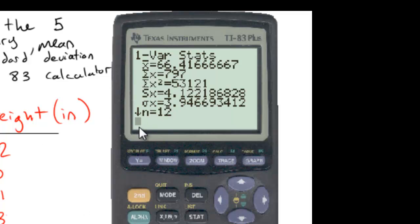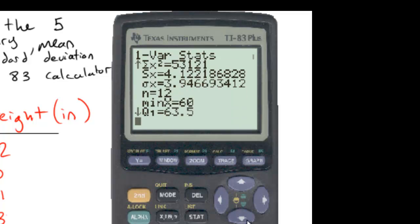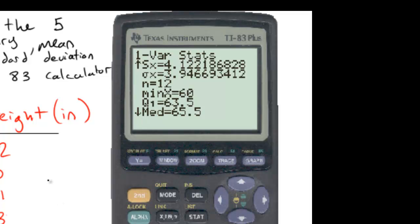If this was our whole class then we would want to use the population standard deviation. N is the number of values that I have. Notice it says 12 and that's correct.